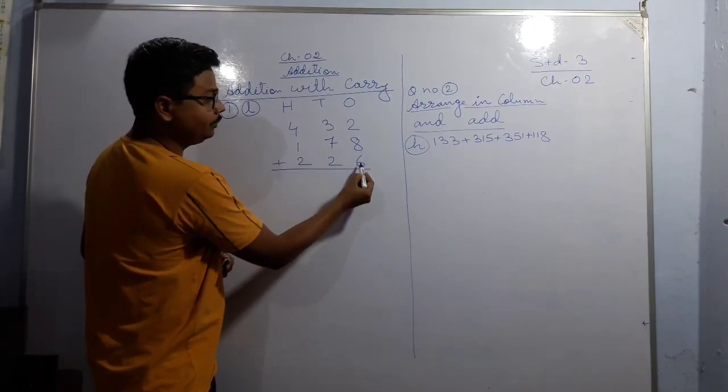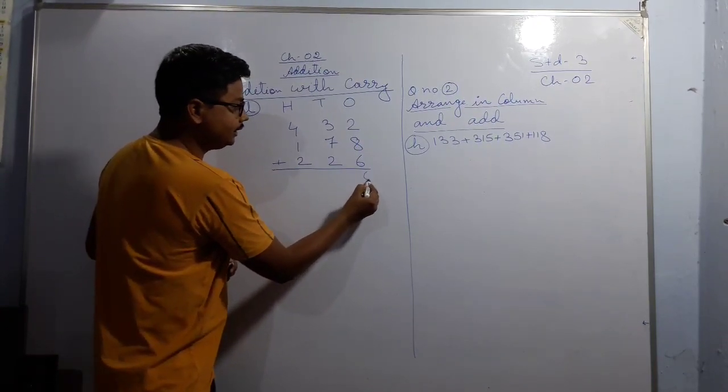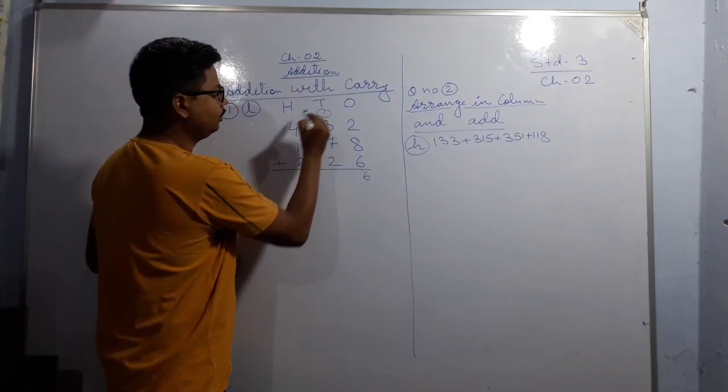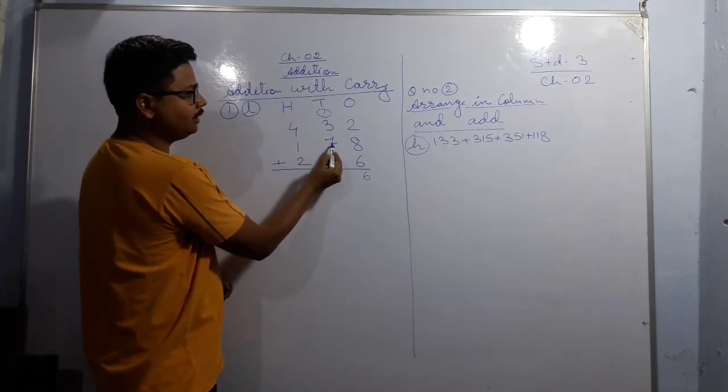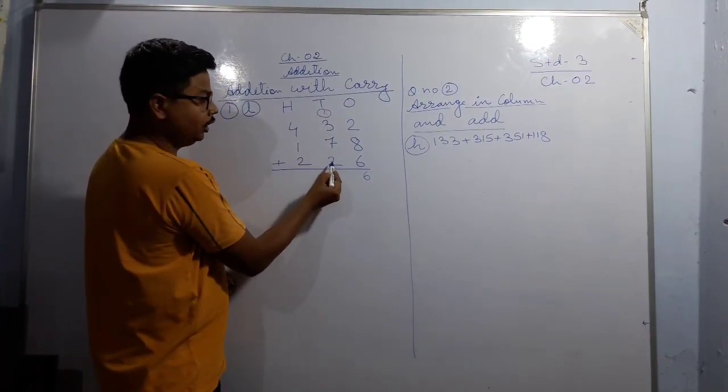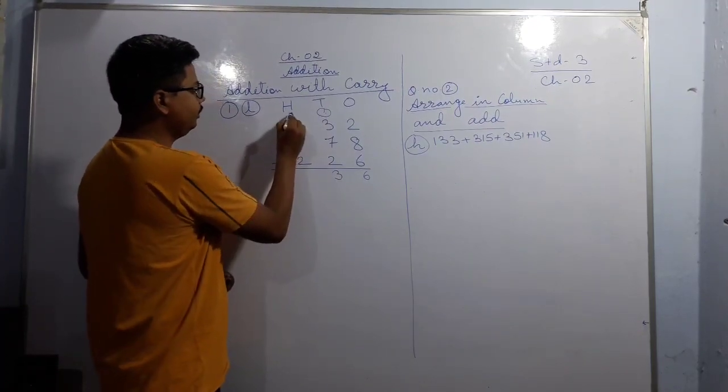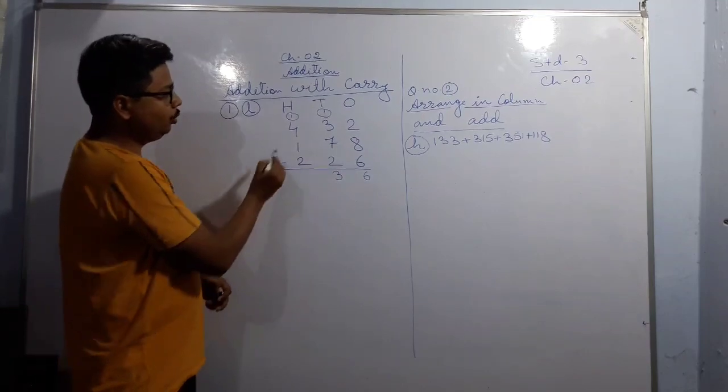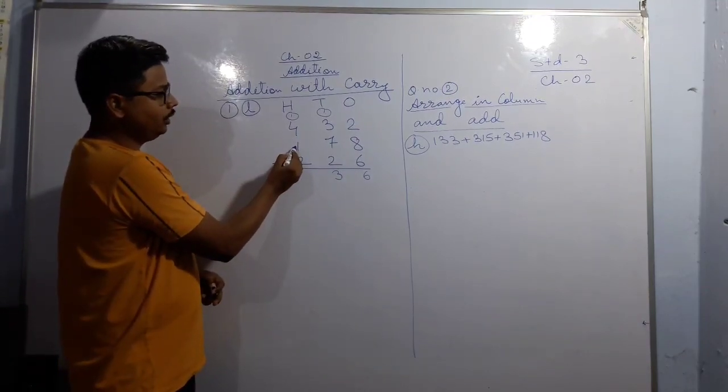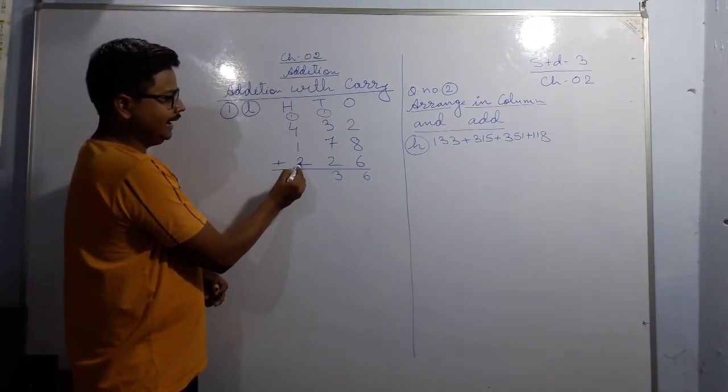Again, 3 + 7 = 10, 10 + 2 = 12, 12 + 1 = 13, 3 carry 1. Now 4 + 1 = 5, 5 + 2 = 7, and 7 + 1 = 8. So in this way you can solve addition with carry.